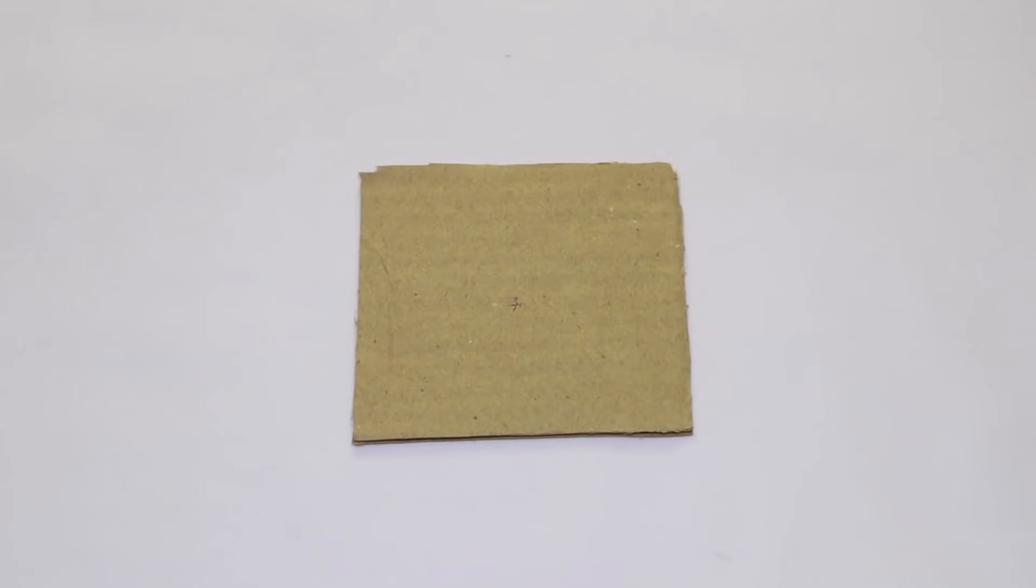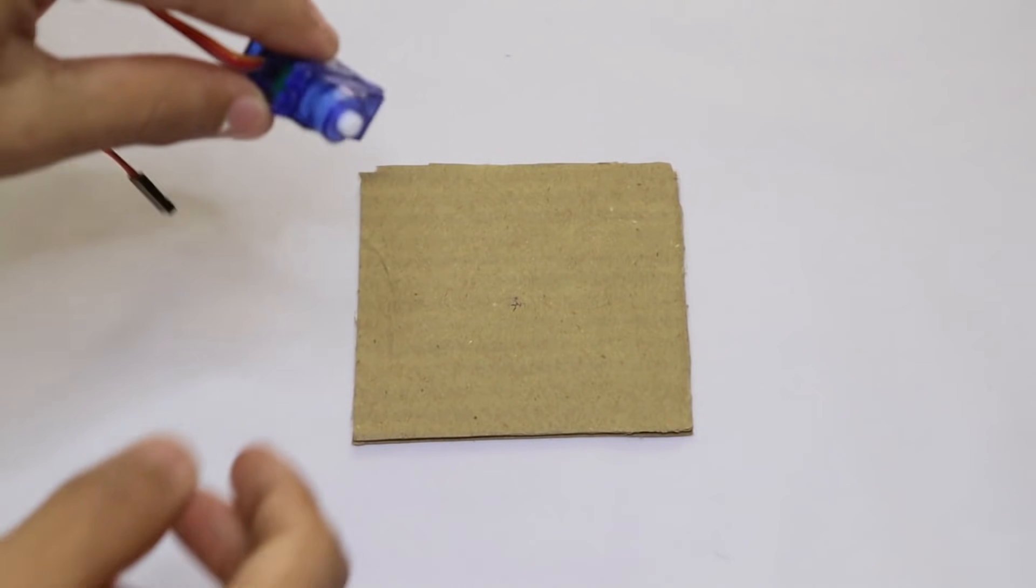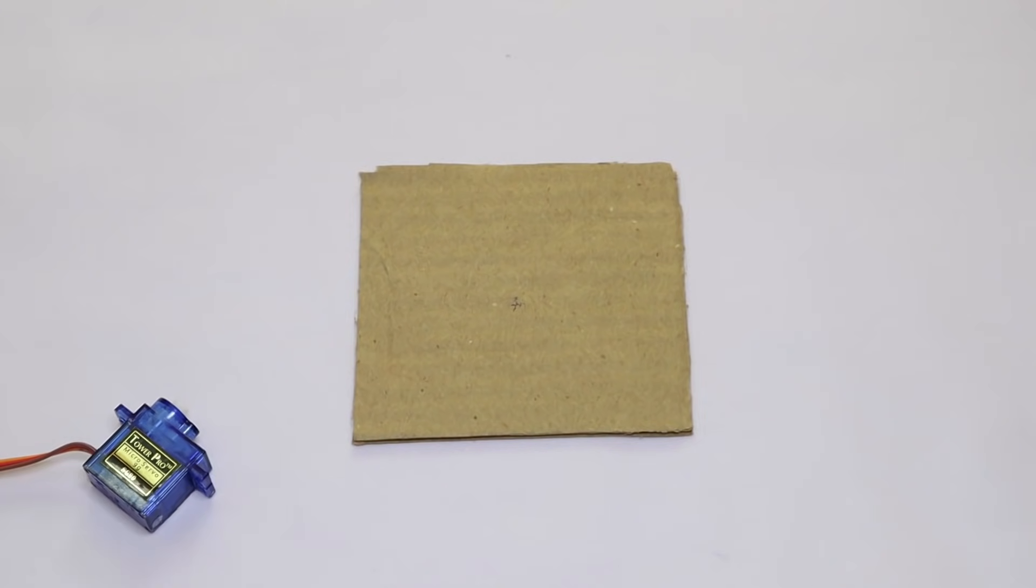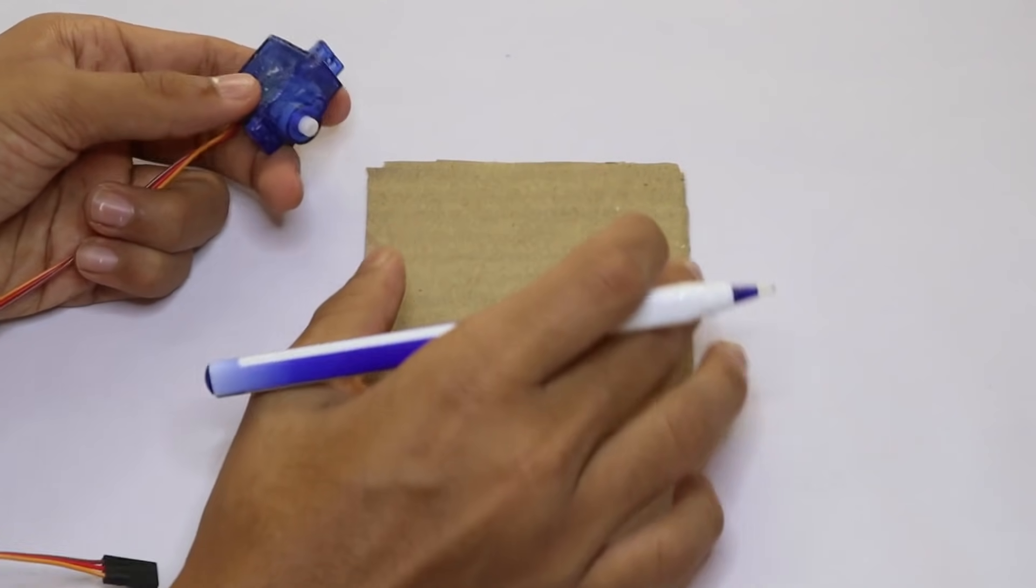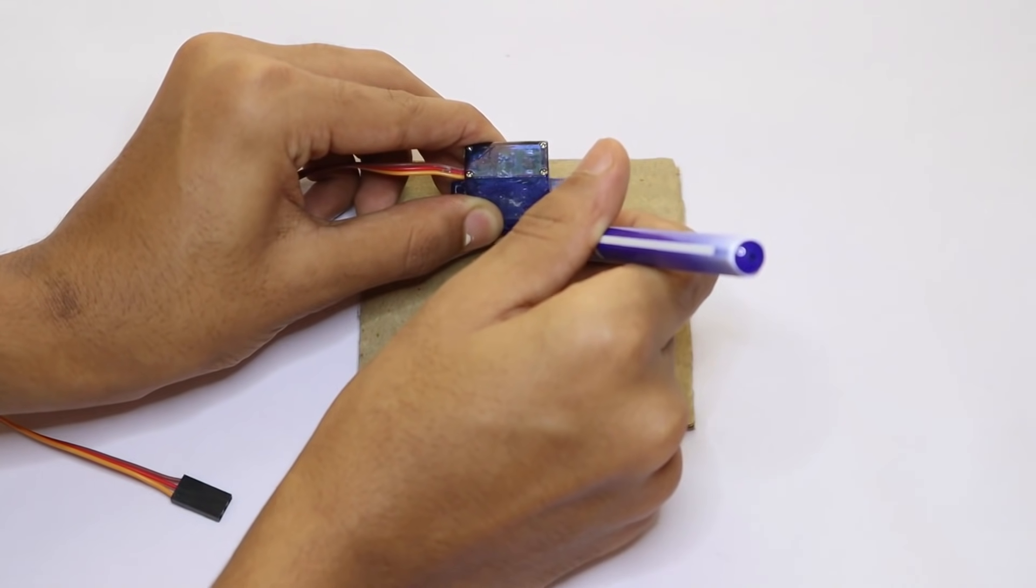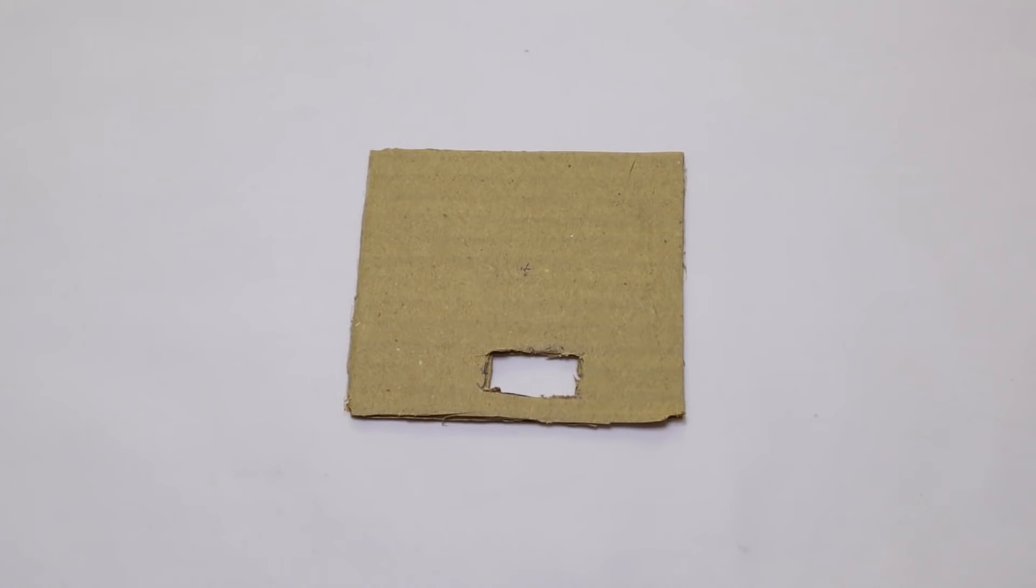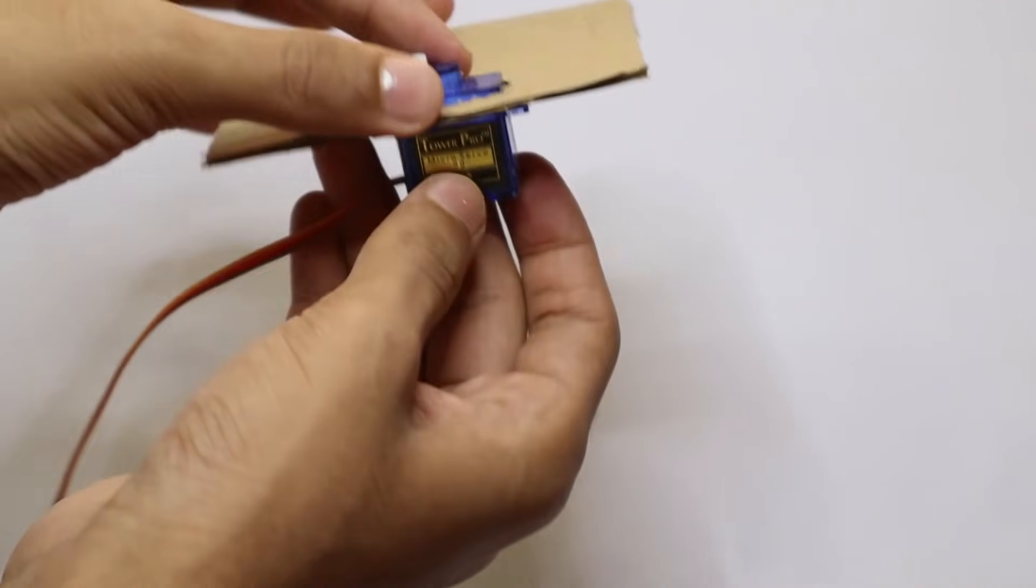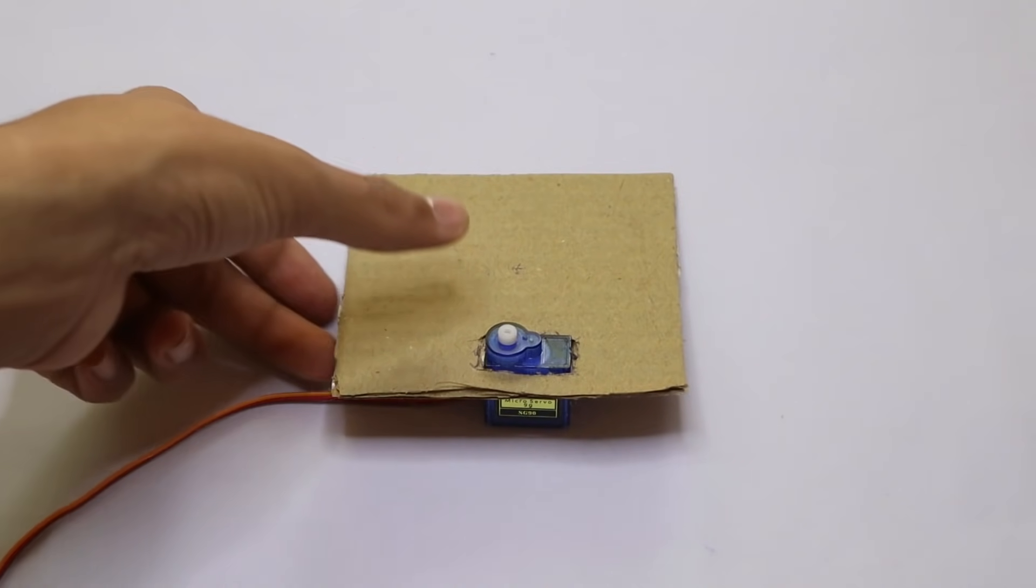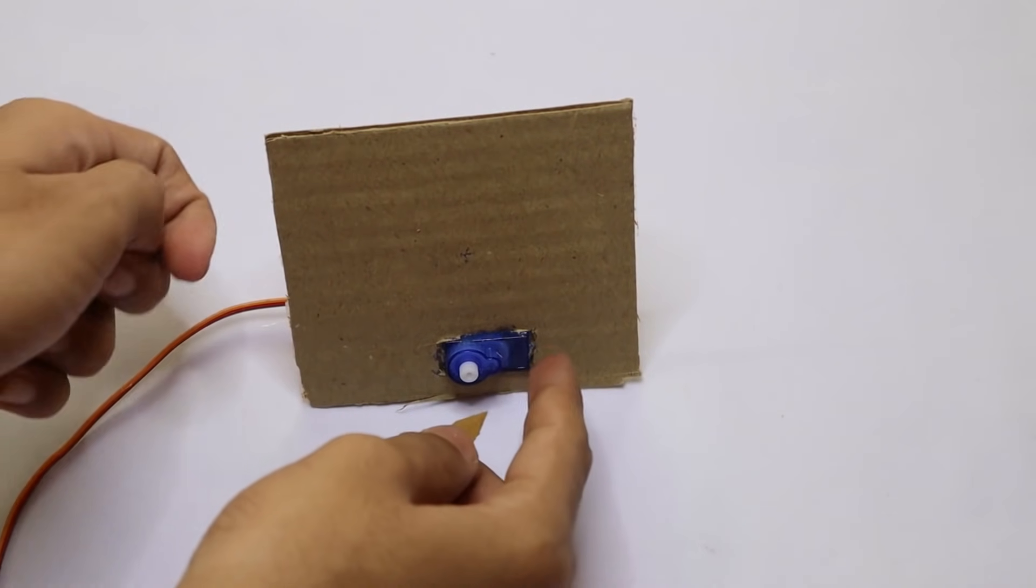To start making the servo distance indicator, first take your servo and a pen. Now trace the bottom part of the servo right here and you need to cut out that part. Now I have made the hole. Next step is to put the servo and hot glue it in place.